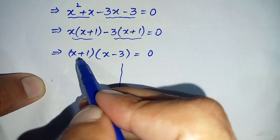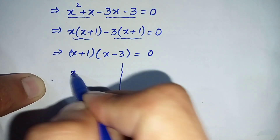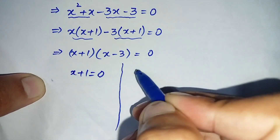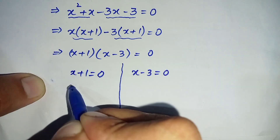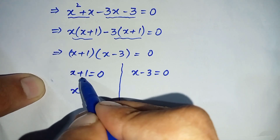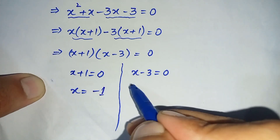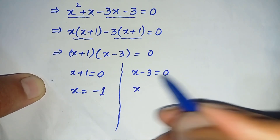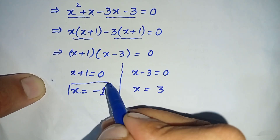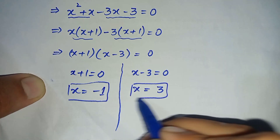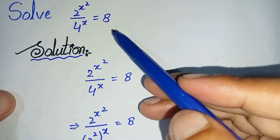This implies (x plus 1)(x minus 3) is equal to 0. There are two factors on the left hand side. Either x plus 1 equals 0, giving x equals minus 1, or x minus 3 equals 0, giving x equals 3. So x equals minus 1 and x equals 3 are the possible solutions of this exponential math problem.